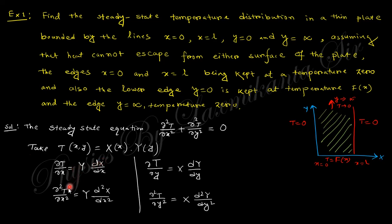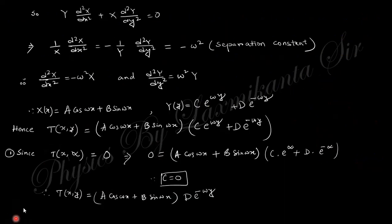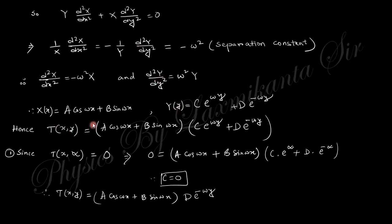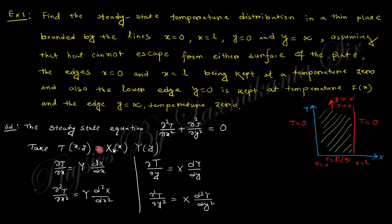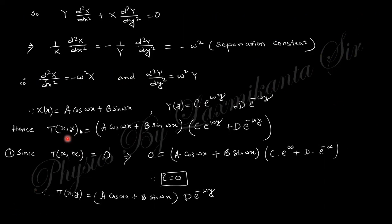The steady state equation says this, and by separation of variables, the temperature T can be taken as the function of x multiplied by the function of y. If you take the partial derivative with respect to x, you get X''Y, and with respect to y you get XY''. Rearranging, one side is a function of x and the other is a function of y, so both equal a separation constant. The solution for X gives sine and cosine terms, and for Y gives exponential terms. The total solution is the product of these two.